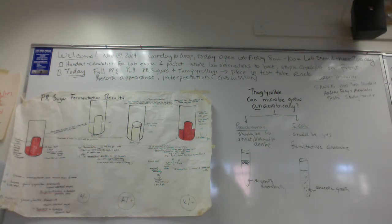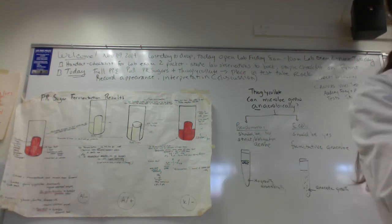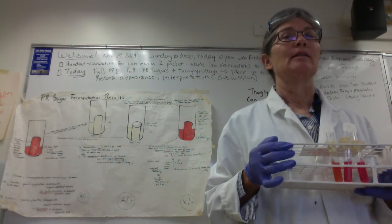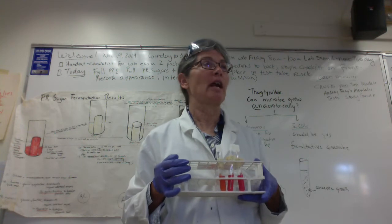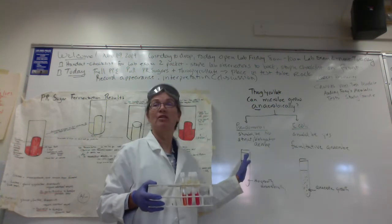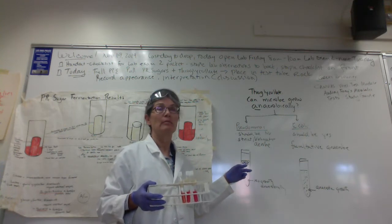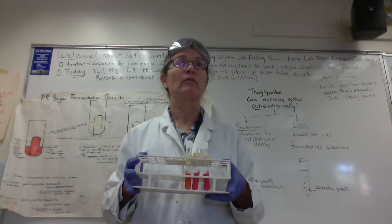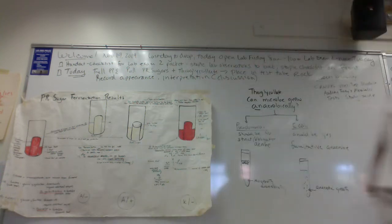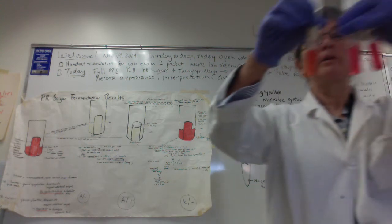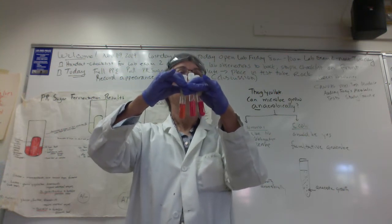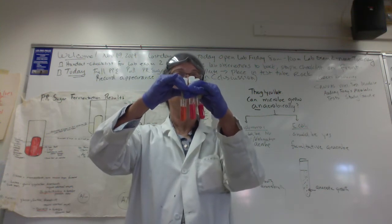On the PR sugars, I ran Pseudomonas fluorescens — a strict or obligate aerobe. Louis Pasteur described fermentation as life in the absence of air. If Pseudomonas only grows at the top of the thioglycolate, you'd conclude it's a strict obligate aerobe. Would you predict Pseudomonas would carry out fermentation of sugars? No — it can't carry out fermentation, only aerobic respiration. We inoculated Pseudomonas into PR glucose, PR sucrose, and PR lactose, and the results were consistent with that conclusion.